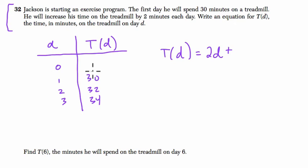That's when D is 0, so I'm going to go back 1 here. If I decrease D by 1, my slope is 2, so I should decrease the time by 2 as well. So it's like going backwards in time, where on a zero day there is 28 minutes spent on the treadmill. So it's 2D plus 28.